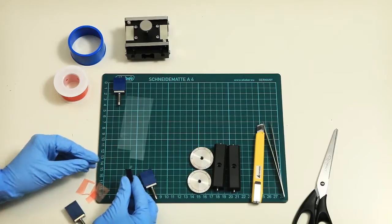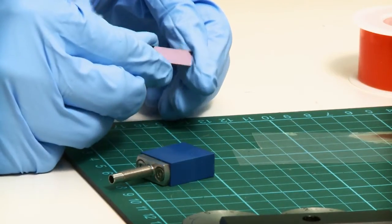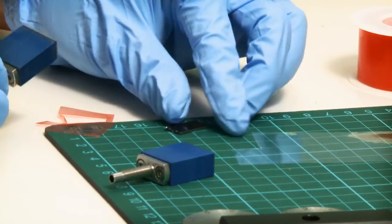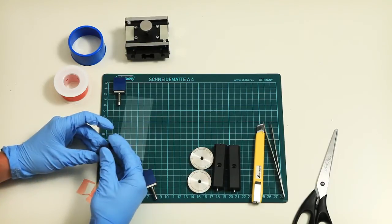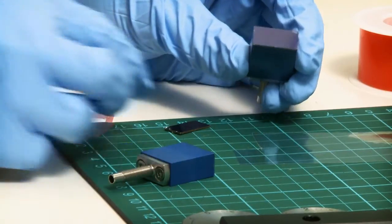Sometimes we might also measure rigid samples with this cell, like wafers, for example. In such cases, we'd have to cut out an according piece and apply it directly to the holder.